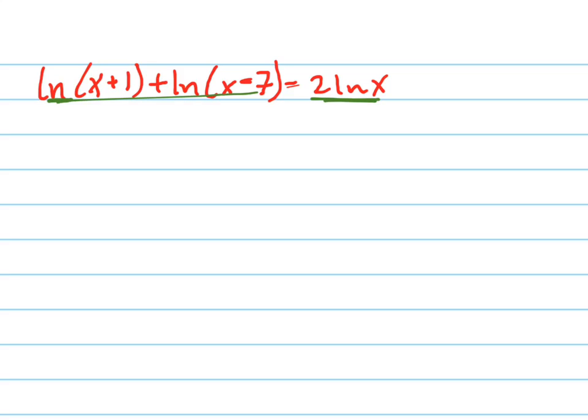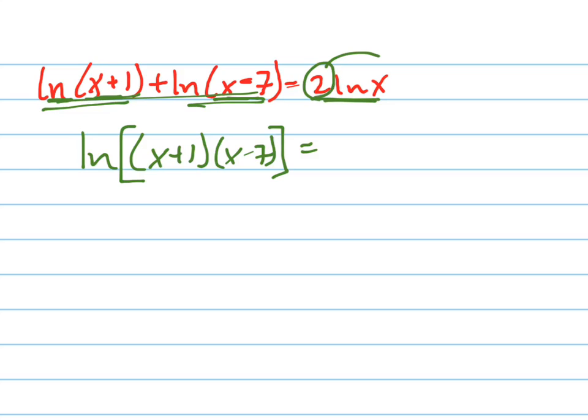So let's do that. Remember when I'm adding two logarithms that are the same base, I can multiply the two arguments. These are called arguments right here, what you're taking the log of. And then when I've got a 2 in front, I can bring it up top and make it like that.